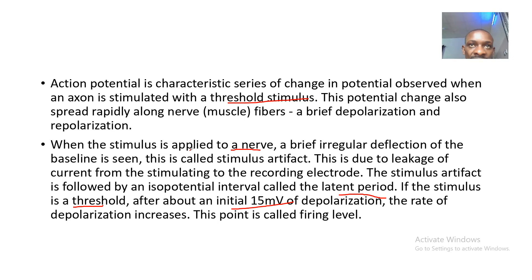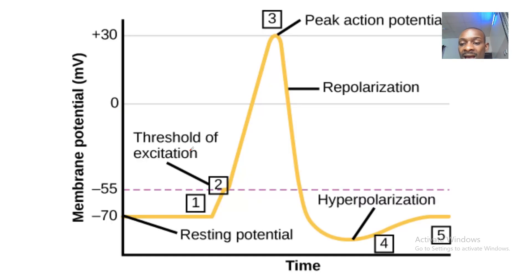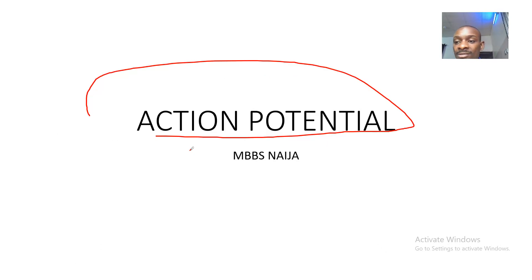So these are a brief overview of the action potential: we have the stimulus artifact, the firing stage, depolarization, repolarization, after-depolarization, and after-hyperpolarization. I'll see you guys in the next tutorial — bye for now.